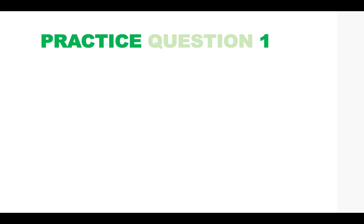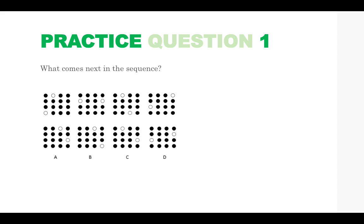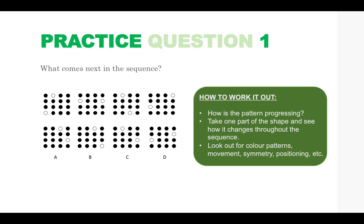Okay so let's have a look at some practice questions. Practice question one, what comes next in the sequence. So here in the top row we've got our sequence and the bottom row we have our answer options. Your job is to work out what would come next in the sequence. The best way to work out questions like this is to take one part of the shape and see how it changes throughout the sequence.